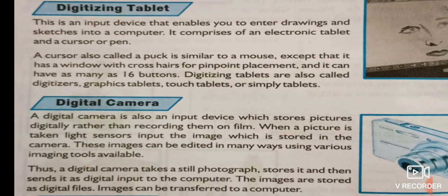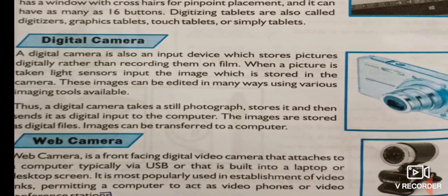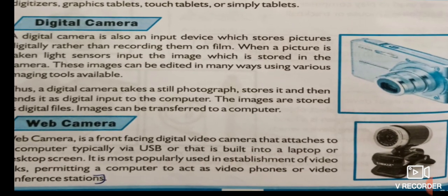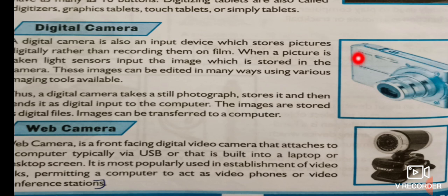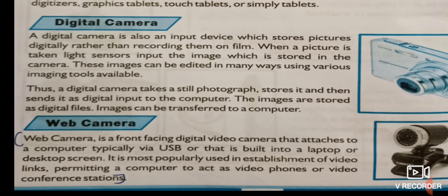The next input device is the digital camera. A digital camera is also an input device. You can take a picture and store it for later use. The camera receives the input, and once you have taken a picture it can be transferred to your computer system and viewed through your system as well.